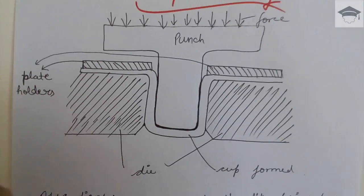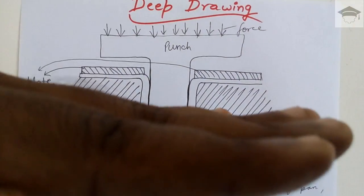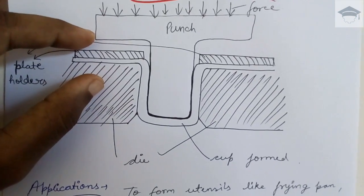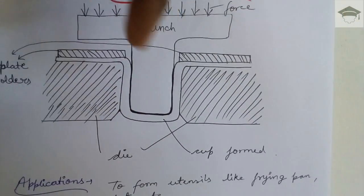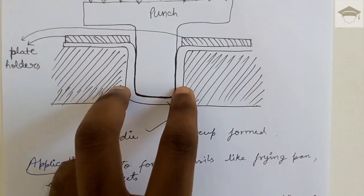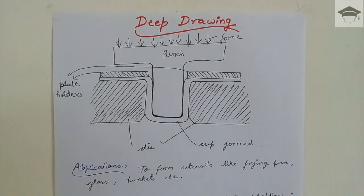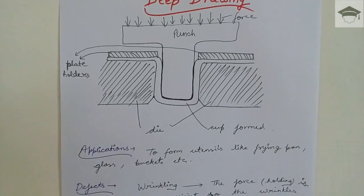That is, it is very simple because just you have to place the plate, you have to clamp it in the plate holders, you have to put the punch through, and the required cup will form. It is very fast process. So I hope you have understood what is deep drawing, its applications, defects, and advantages.